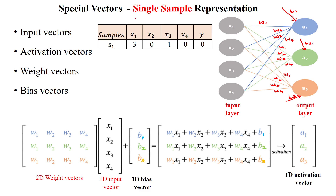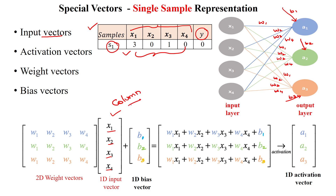When we have a dataset with only a single sample with four features, this dataset has four features and one sample, with the target output also given. The input vectors — all the features — can be represented in the form of x1, x2, x3, x4. This is a column vector. The column vector is useful to represent the given input dataset sample by sample.